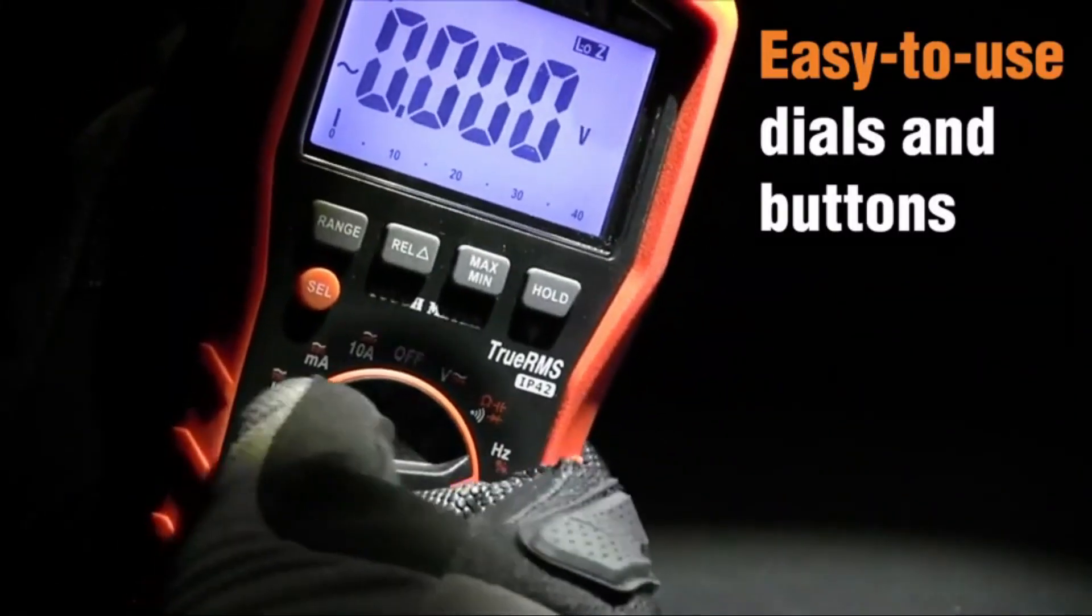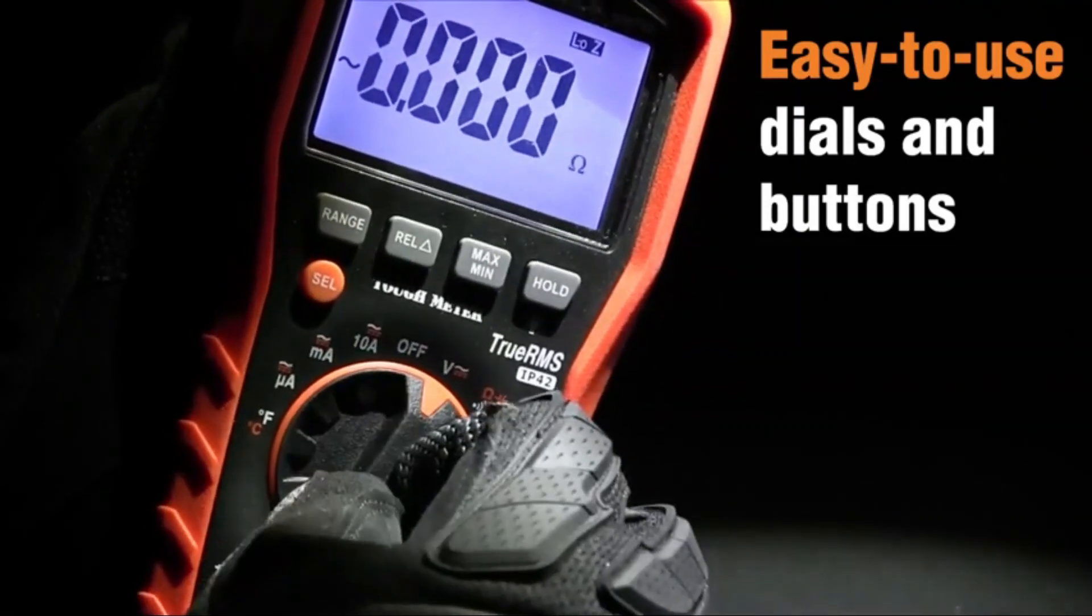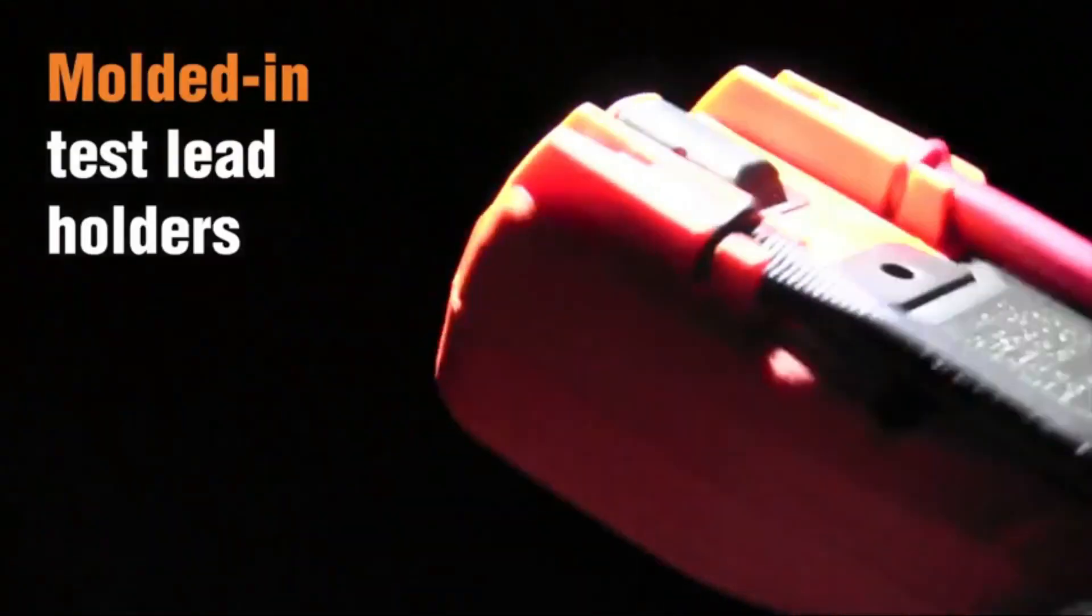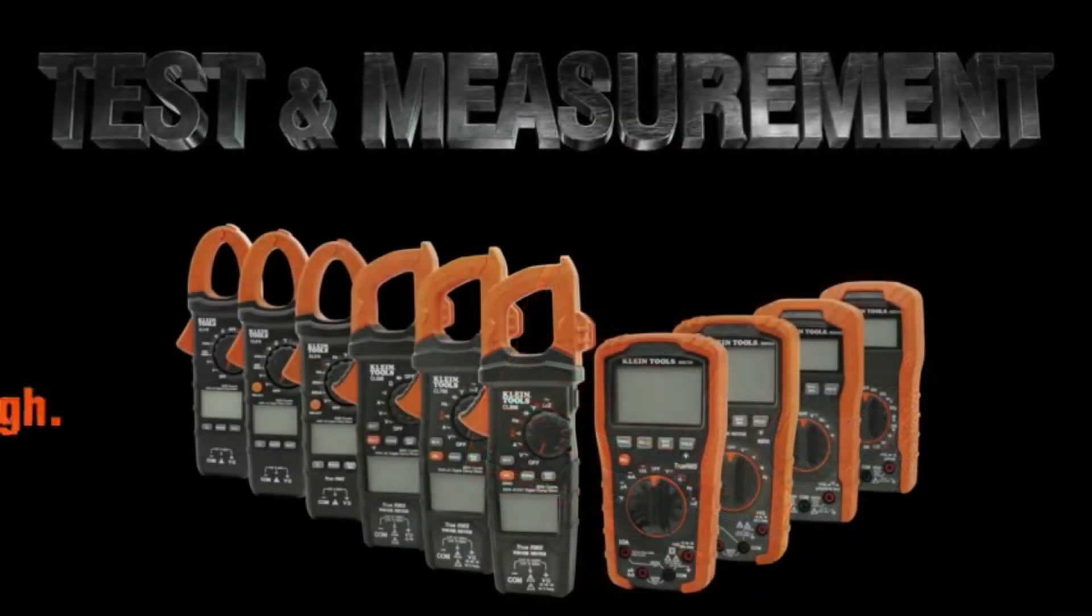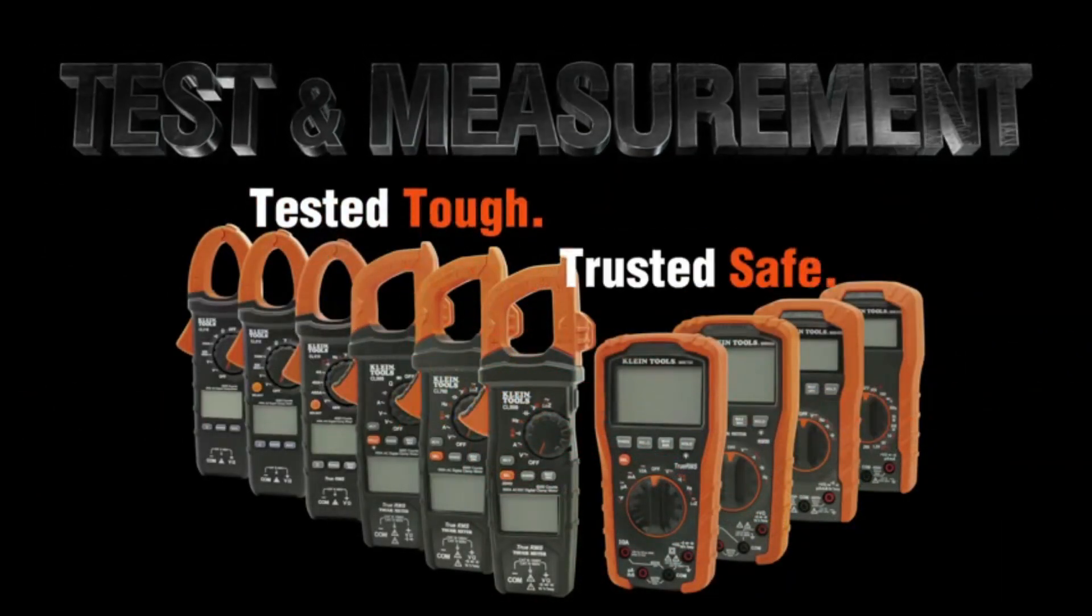Receptacle testers detect wiring configurations and show correct wiring. It also identifies the most common wiring errors. It detects open-hot, open-ground neutral, open-hot, and ground-reversed.